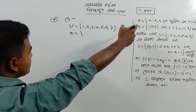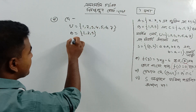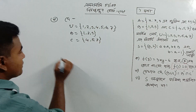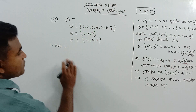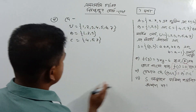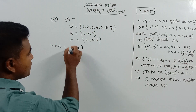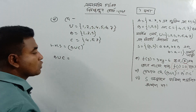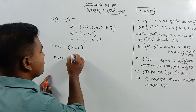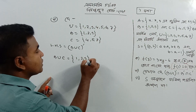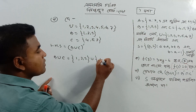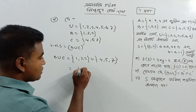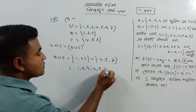b is equal to {1, 2, 3} and c is equal to {4, 5, 7}. B union C is equal to what? B union C: b equals {1, 2, 3} and c equals {4, 5, 7}. Union means {1, 2, 3, 4, 5, 7}.